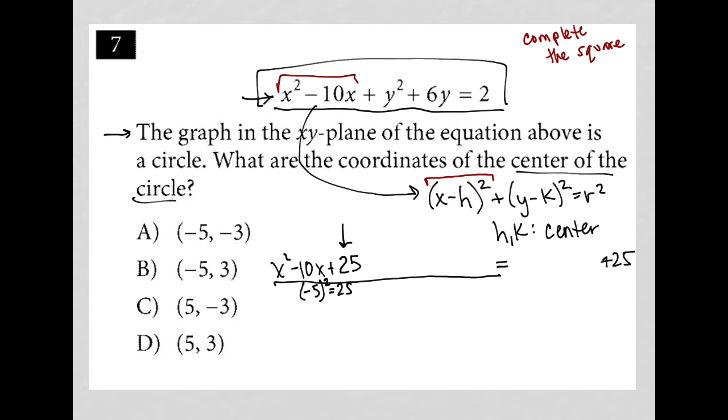Let's do the exact same thing for our y values. Starting off with what I had, y squared plus 6y. Half of the coefficient in front of y is 3. 3 squared equals 9. So I add 9 here. And I'm going to just add 9 there as well. The original question also had a 2 on the right-hand side of the equation. So I'm going to just also put my 2 there as well.